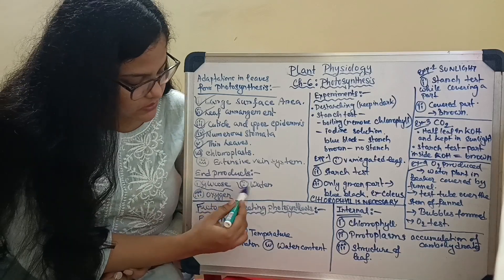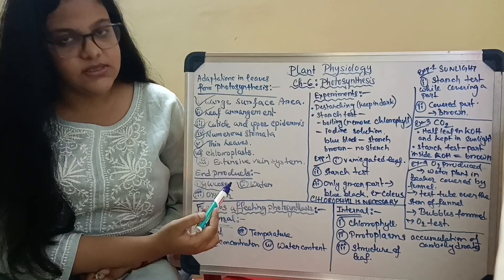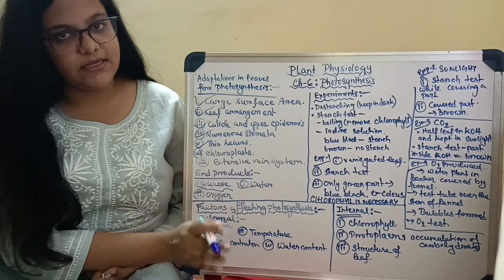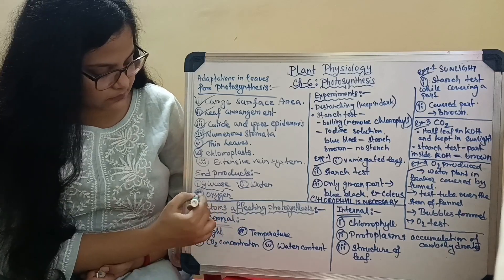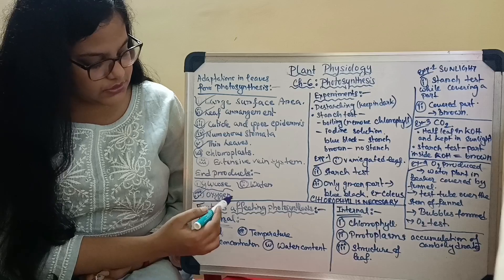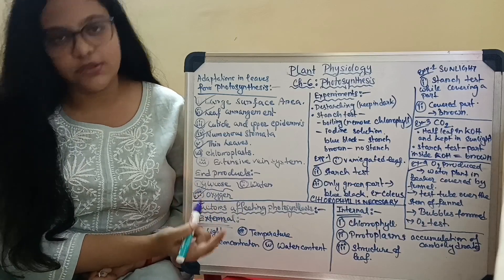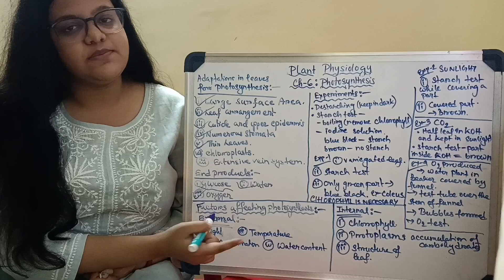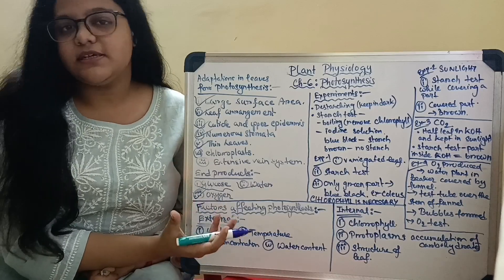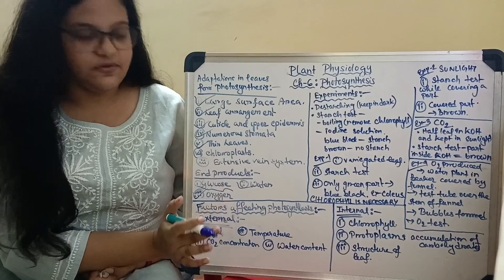Next comes water: the water produced in photosynthesis is reused by another cycle of photosynthesis. Next comes oxygen: the oxygen released in photosynthesis is converted into molecular oxygen which enters the outer atmosphere. It doesn't go to waste — we all take up oxygen in order to survive.